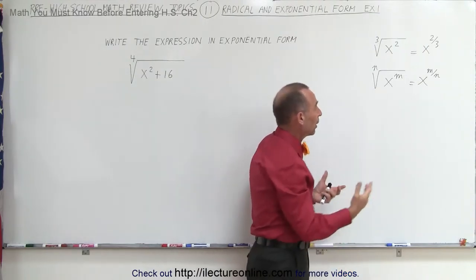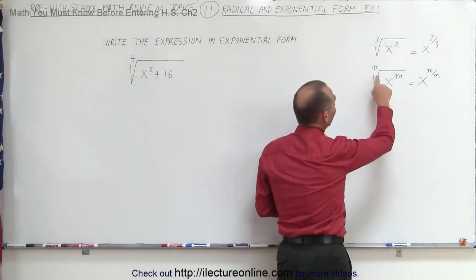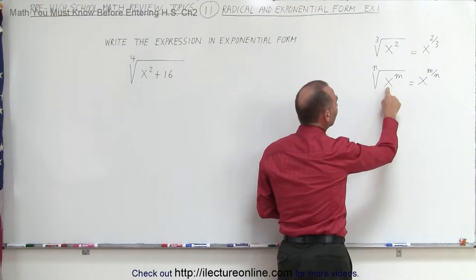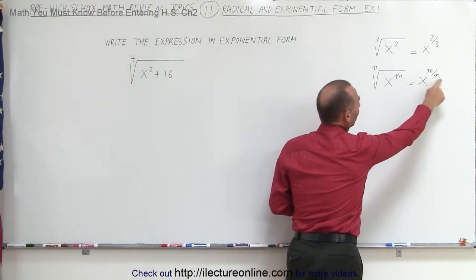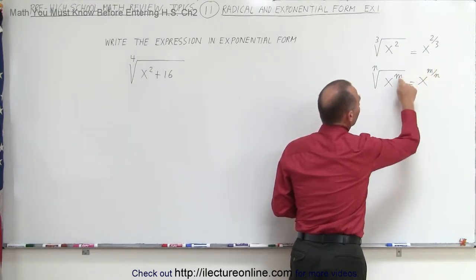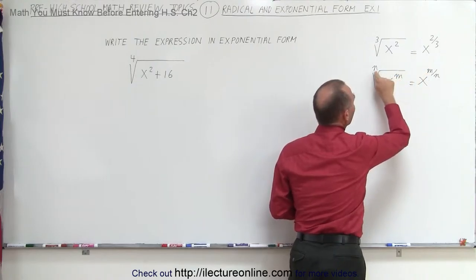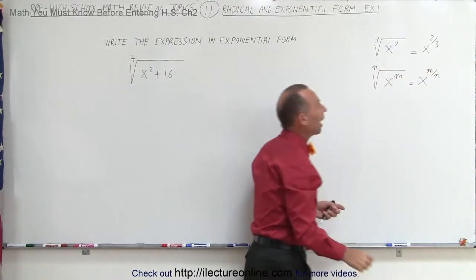In general terms, without using numbers, we can say that this is the nth root of x to the m power. m becomes the numerator because that's the power, and n is the root which goes to the denominator.